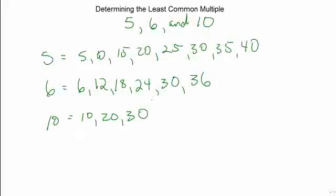Since thirty is the first multiple that they all share, it is the least common multiple. So therefore, we can determine or say that the least common multiple of these three numbers is thirty.